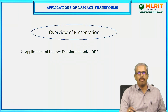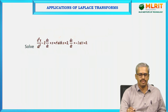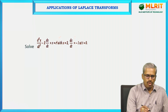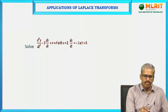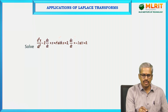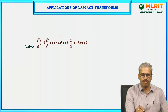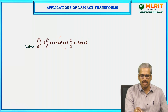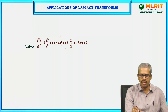Let us see how to apply Laplace transform to solve ordinary differential equations with initial conditions. The problem is: solve d²x/dt² minus 2·dx/dt plus x equals e^t, with initial conditions x equals 2 and dx/dt equals minus 1 at t equals 0.